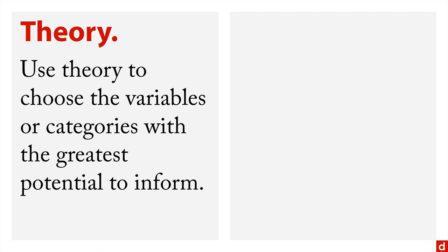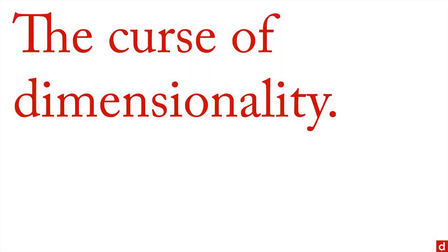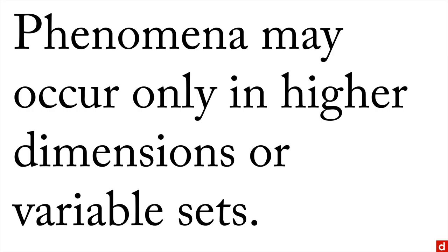A couple of ways of dealing with this. Number one is with theory. Use your theory and your own understanding of the domain to choose the variables or categories with the greatest potential to inform. You know what you're dealing with, rely on that information. Second is there are data-driven approaches. You can use something called a Markov chain Monte Carlo model to explore the range of possibilities without having to go through every single one of your 95 trillion combinations.